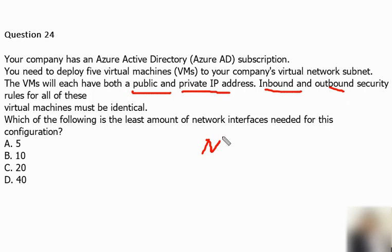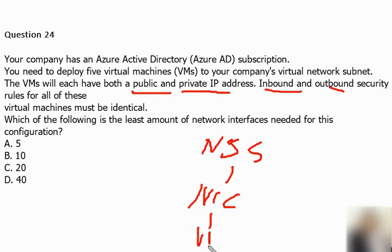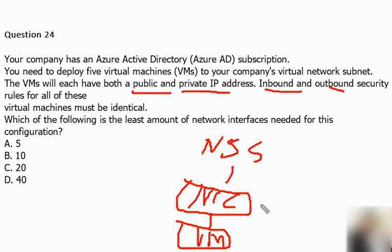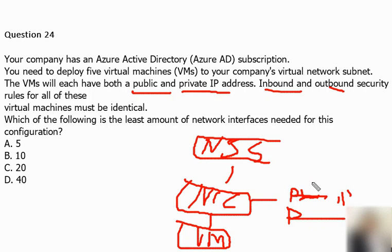In this scenario, we have private and public IP addresses and inbound and outbound rules to consider. A network interface, or NIC, is always associated with a network security group, NSG. One VM can have multiple NICs. One NIC can have both a private IP and a public IP. Inbound and outbound traffic can be filtered through the NSG. So we can create one network security group and associate it with each VM's NIC.